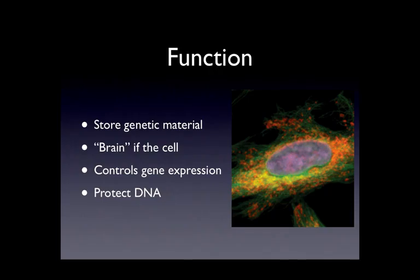The nucleus has four major functions. They include storing genetic material, such as DNA. It also acts like the brain of the cell, controlling all of the functions of the individual organelles surrounding the nucleus. All expressed traits of an organism originate from the DNA that is protected in the nucleus.